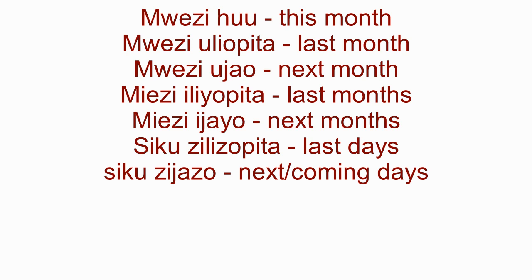Mwezi huu means this month. Mwezi uliopita means last month. Mwezi ujao means next month. Miezi means many months — it is the plural of mwezi. So we say mwezi uliopita for last month, mwezi ujao for next month, and miezi ijayo for coming months.